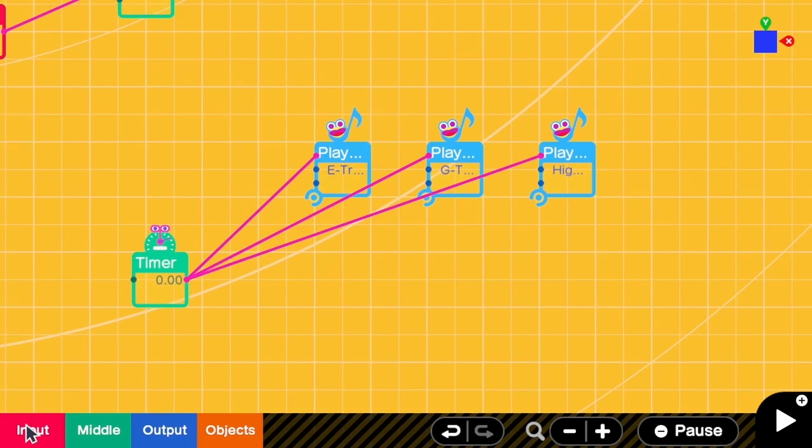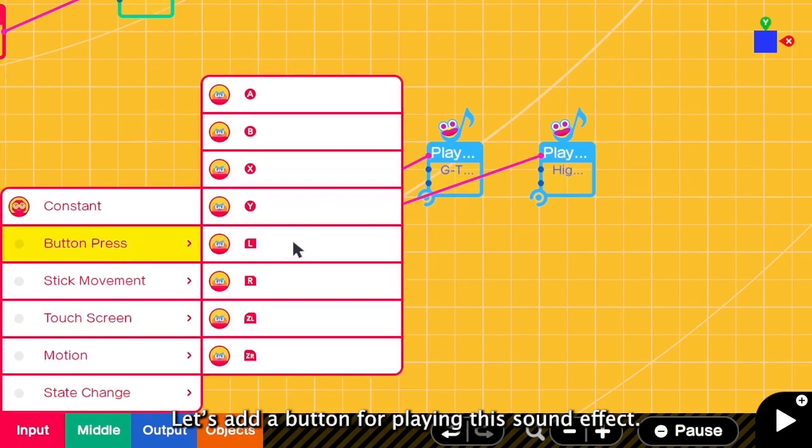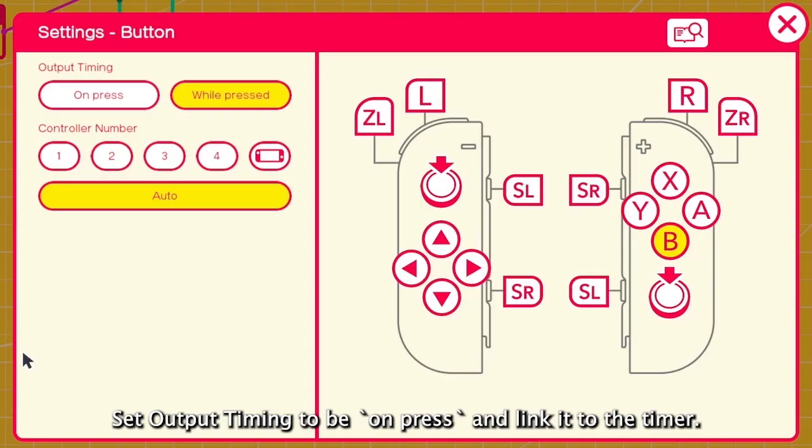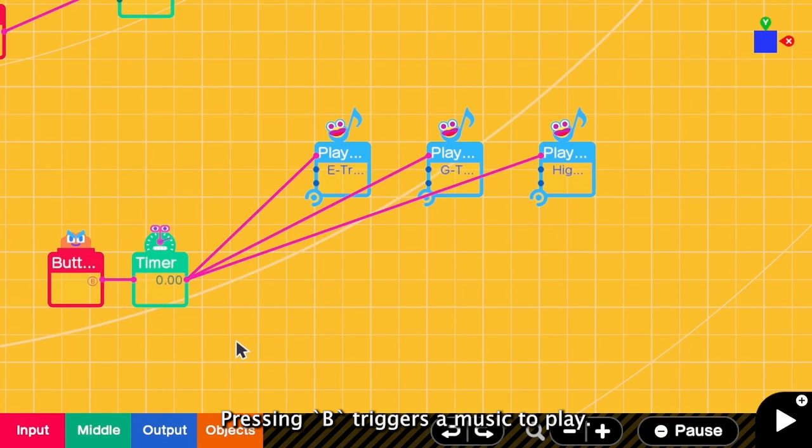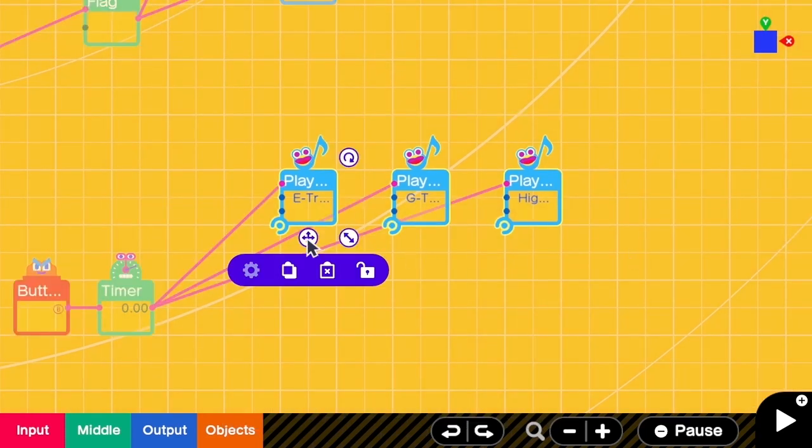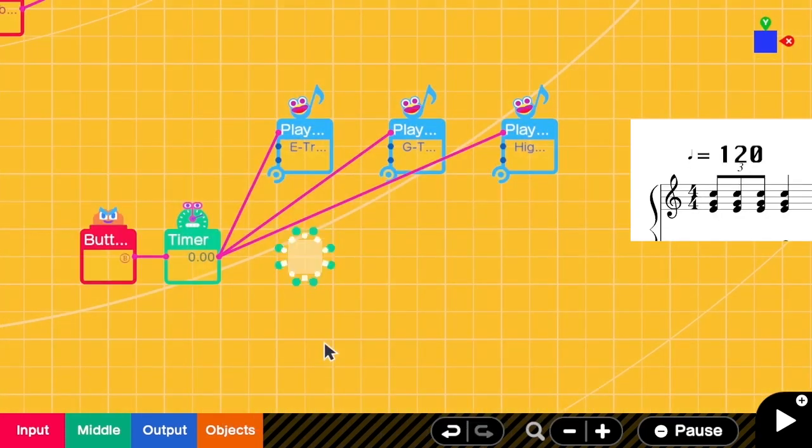Let's test. Let's add a button for testing. I change this button to be on press. And then I connect this to the timer. So now when I press B, the timer will receive an input and then we will be able to hear the music. Okay, let's add the second timer for the second note.